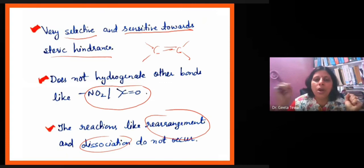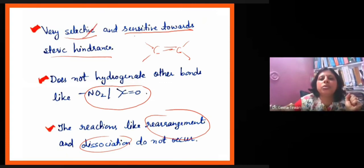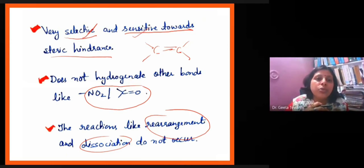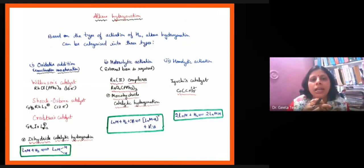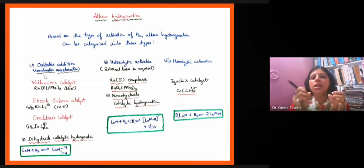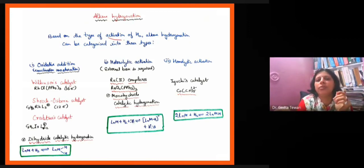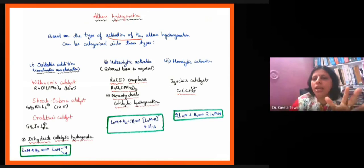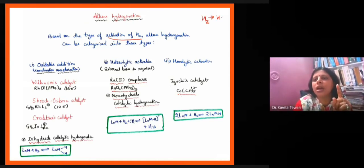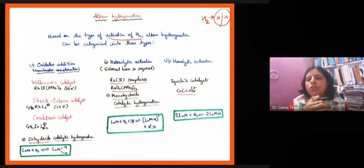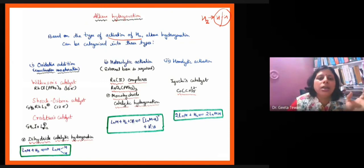In catalytic hydrogenation, you will see that the C=C double bond will be hydrogenated. Again I am telling you that it is selective as well as sensitive towards steric hindrance. If we look at the classification of catalytic hydrogenation, generally it is of three types based on the activation of H₂. The activation means how the H–H bond is cleaved, and there are three types.